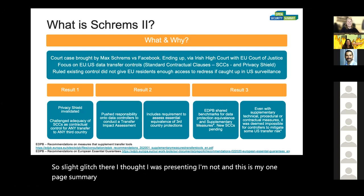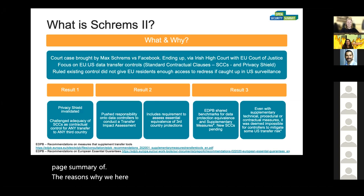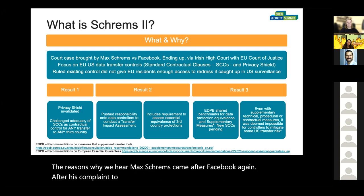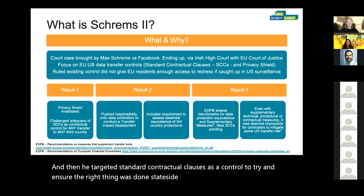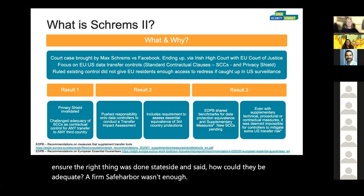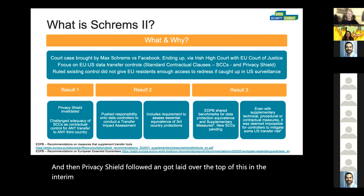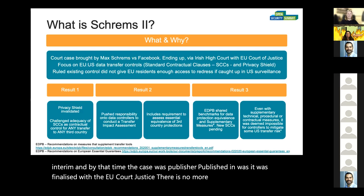This is my one-page summary of the reasons why we're here. Max Schrems came after Facebook again, after his complaint that took down Safe Harbor, calling our controls in Safe Harbor inadequate. He then targeted standard contractual clauses as a control to try and ensure the right thing was done stateside, and said how could they be adequate if Safe Harbor wasn't enough? Privacy Shield followed on and was laid over the top of this in the interim. By the time the case was finalized with the EU Court of Justice, there was no more Privacy Shield and the validity of standard contractual clauses had been called into question.